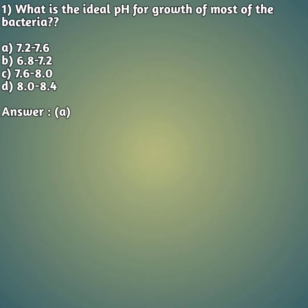Our first question is: what is the ideal pH for growth of most bacteria? Option A: 7.2 to 7.6, option B: 6.8 to 7.2, option C: 7.6 to 8.0, option D: 8.0 to 8.4. The right answer is option A — 7.2 to 7.6 is the ideal pH for the growth of most bacteria.